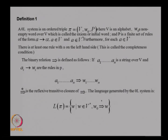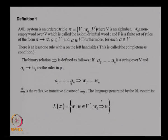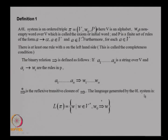Not only that, in the Chomsky hierarchy the start symbol was always a single symbol S. Now here the starting point will be a string, called the axiom. A 0L system — where 0 denotes without interaction — is an ordered triple (V, W₀, P) where V is the alphabet, W₀ is a non-empty word over V called the axiom, and P is a set of production rules.